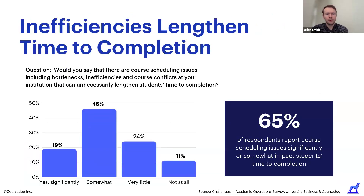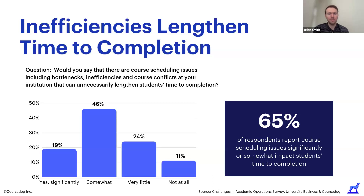We know from our partners that inefficiencies in the scheduling process lengthen time to completion. We partnered with University of Business to conduct a survey on academic operations, with over 220 responses. Sixty-five percent of respondents said that course scheduling issues either significantly or somewhat impact students' time to completion — a very high percentage, and definitely something to think about when considering scheduling best practices.